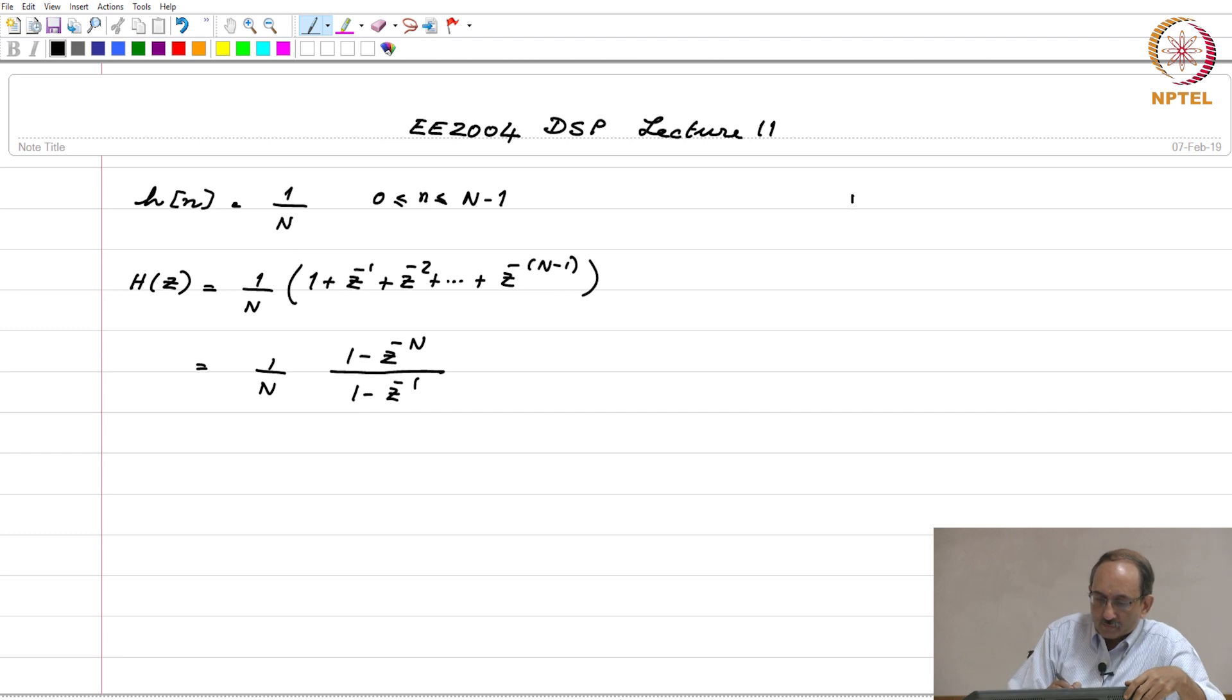In terms of pole-zero plots, there is a pole at—we also saw that there is an n minus 1th order trivial pole.